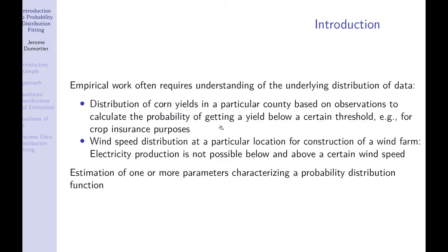Empirical work often requires that we have some understanding about the underlying distribution of data. For example, if you think about corn yields or crop yields in a particular county, and you have data about the yield distribution over the years, then you may be interested in what is the probability in a given year that the yield is below a certain threshold. That may be important for crop insurance purposes.